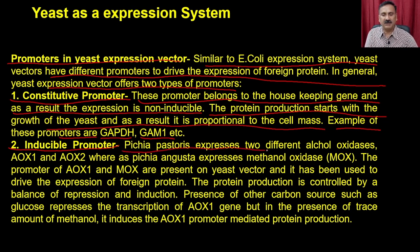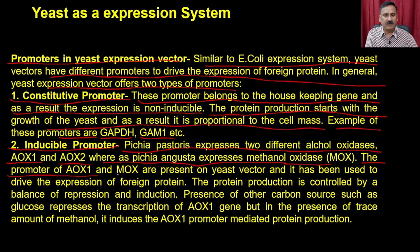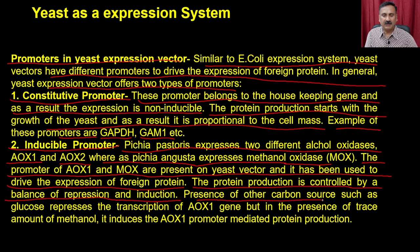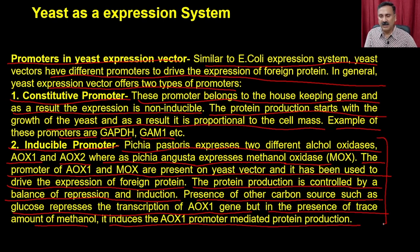Pichia pastoris expresses two different types of alcohol oxidase - AOX1 and AOX2 - whereas Pichia augusta expresses methanol oxidase or MOX. The promoters of AOX1 and MOX are present on the yeast vector and have been used to drive the expression of foreign proteins. The protein production is controlled by a balance of repression and induction - the presence of another carbon source such as glucose represses transcription of the AOX gene, but in the presence of trace amounts of methanol it induces the AOX1 promoter-mediated protein production.